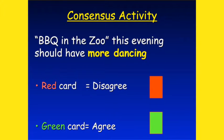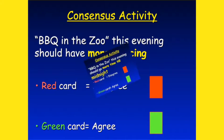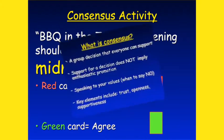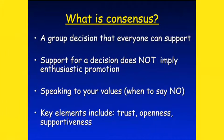So you have some challenges here, but the vast majority green. Barbecue in the zoo this evening should go more time till midnight. So what we have here now is some sort of inquiry. The consensus basically is a balance between advocacy and inquiry, but at the end, a decision should be supported by everybody. So Professor Hoffman, you have to support more drinks, more dance, and more music. Midnight — there was no consensus about that.